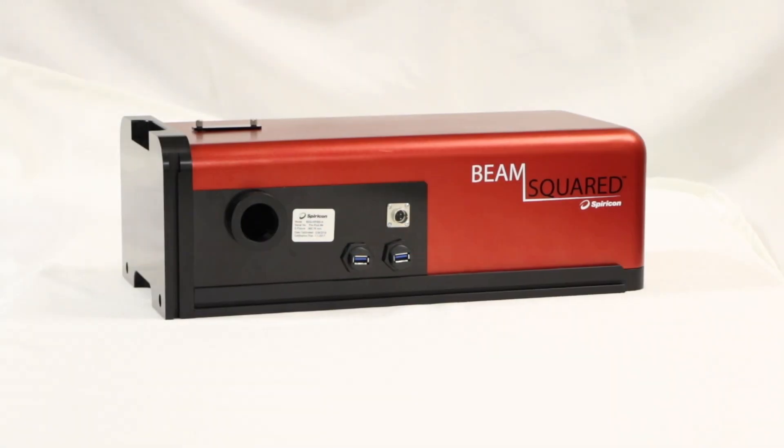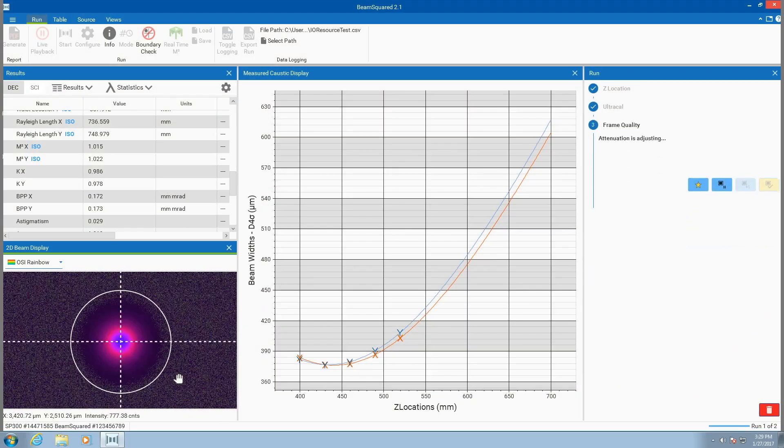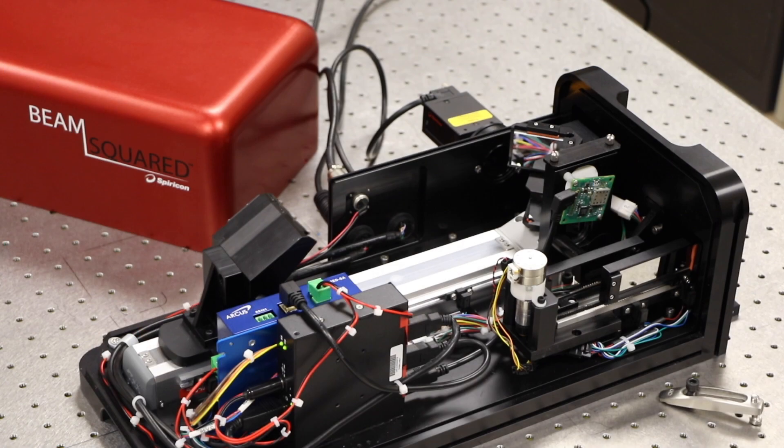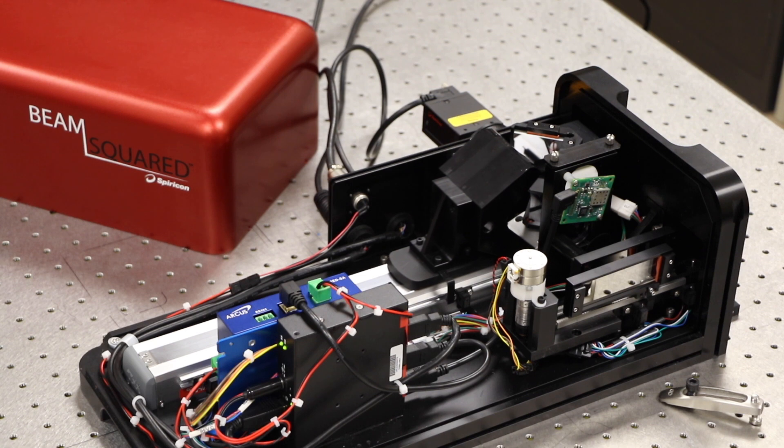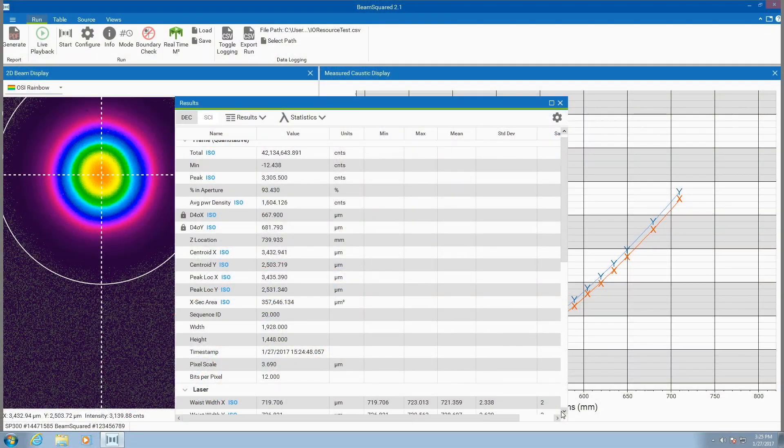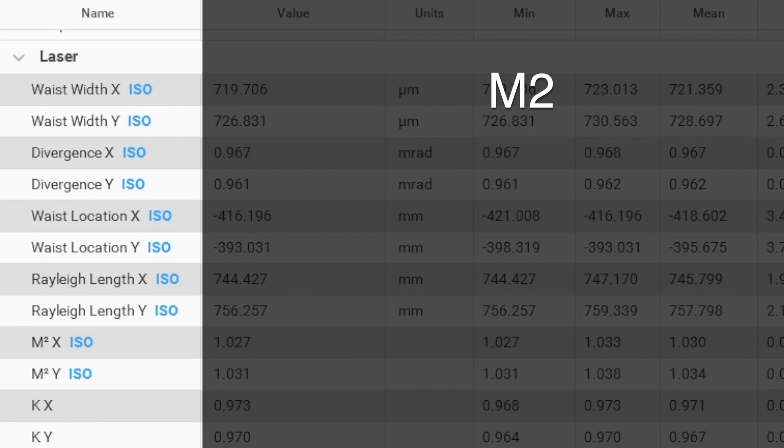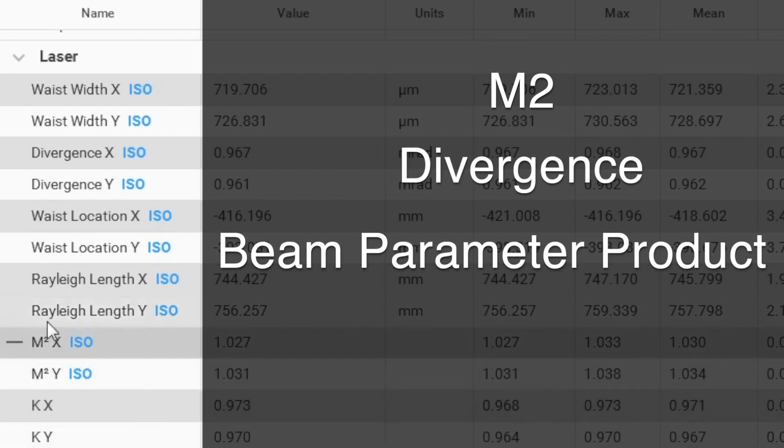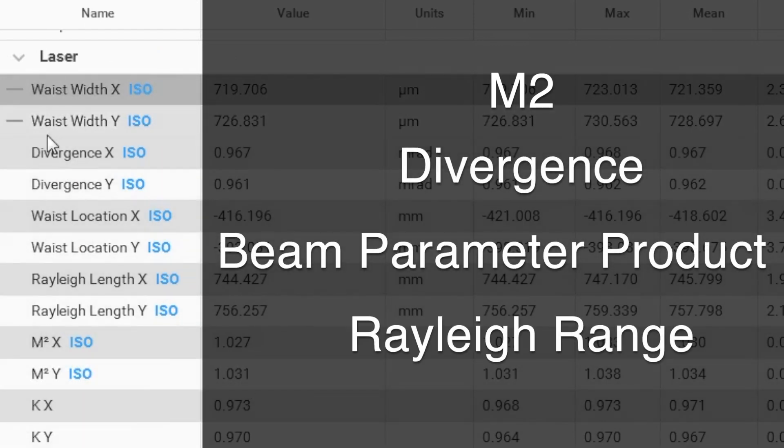Ophir introduces an exciting new feature for the automated Beam Squared laser beam propagation measurement system. The Ophir Beam Squared automatically scans your laser beam to measure the important propagation characteristics including m-squared, divergence, beam parameter product, and Rayleigh range.